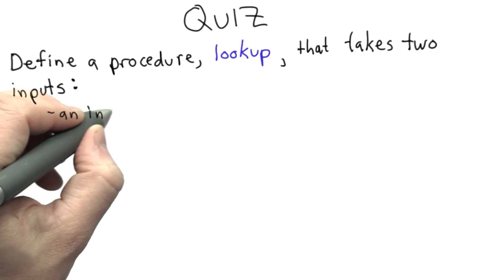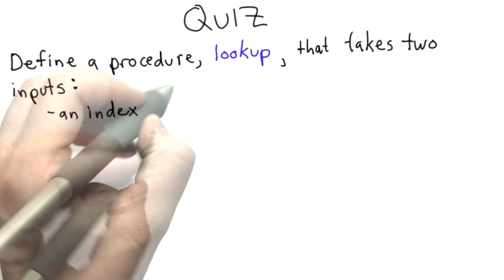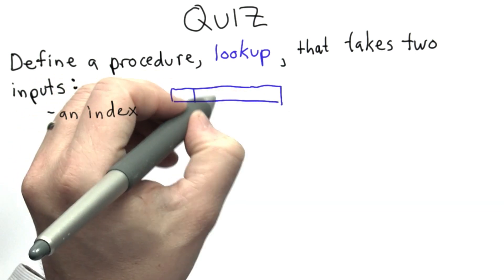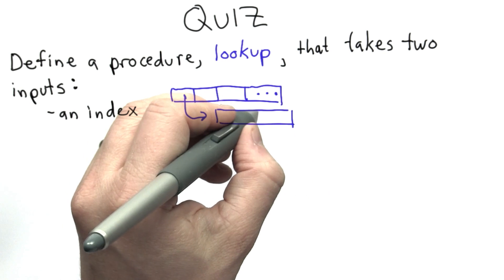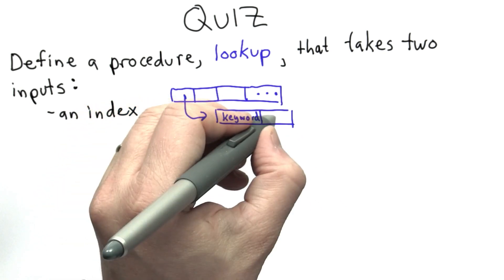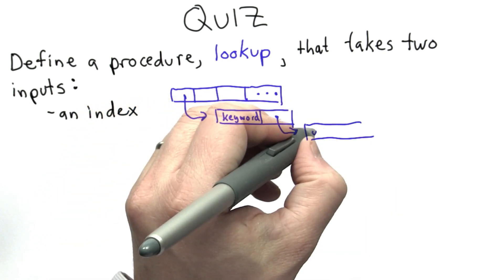The lookup procedure takes two inputs. The first is an index, the data structure we've been working with. It's a list where each element is a list containing a keyword and a list as its second element, which is a list of URLs where that keyword appears.